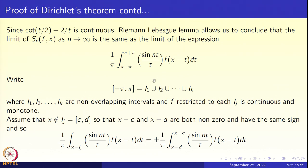Now we look at the intervals on which the function is monotone. We break the interval from minus π to π into finitely many non-overlapping intervals I_1, I_2, …, I_k, with f restricted to each I_j continuous and monotone. Since the integration is from x minus π to x plus π, these intervals have to be translated by x, so we look at x plus I_1, x plus I_2, etc.